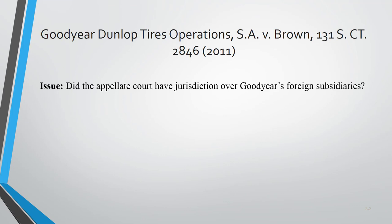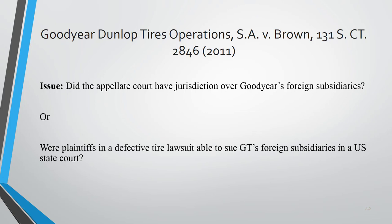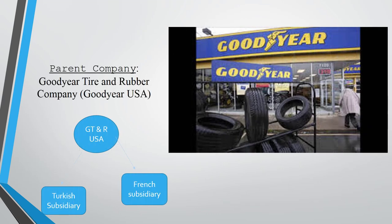Goodyear Tyre is a 2011 case and the issue was really about whether state courts have jurisdiction over foreign subsidiaries of US corporations. Were the plaintiffs in a defective tyre lawsuit able to sue Goodyear Tyre, a US corporation, but were plaintiffs able to pull the foreign subsidiaries into a US court? We'll take a look at the facts, the plaintiffs, the defendants, and the court's two-step approach to analyzing jurisdiction.